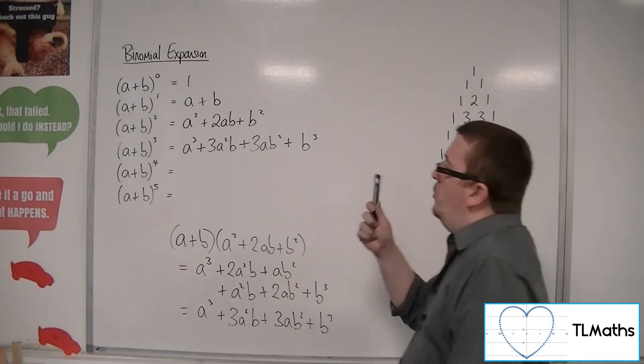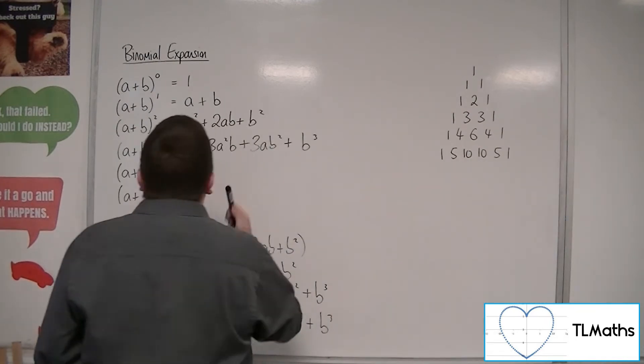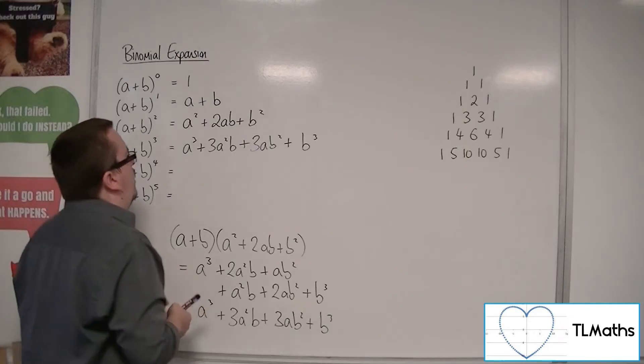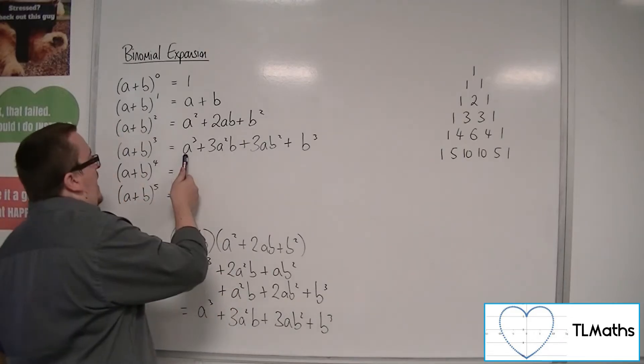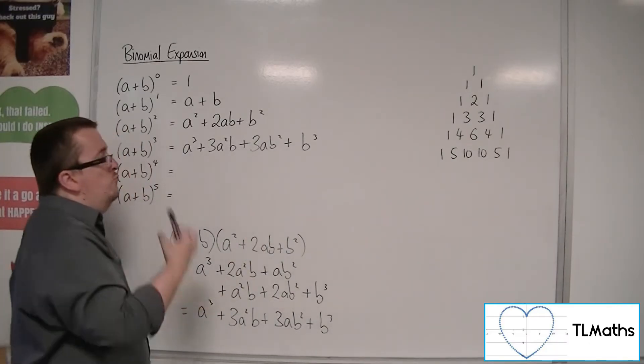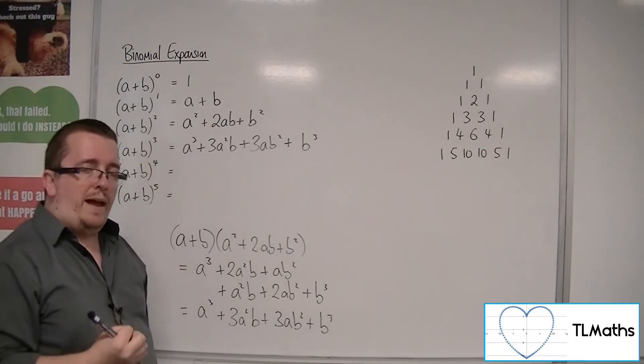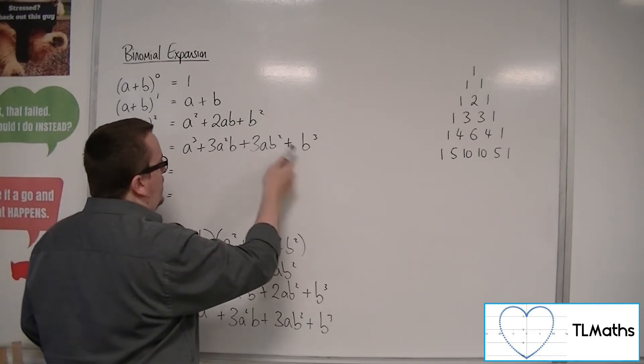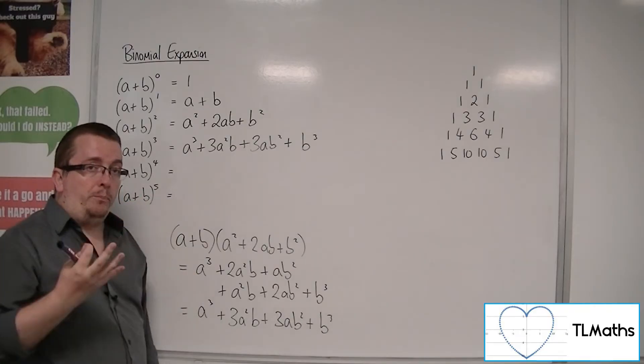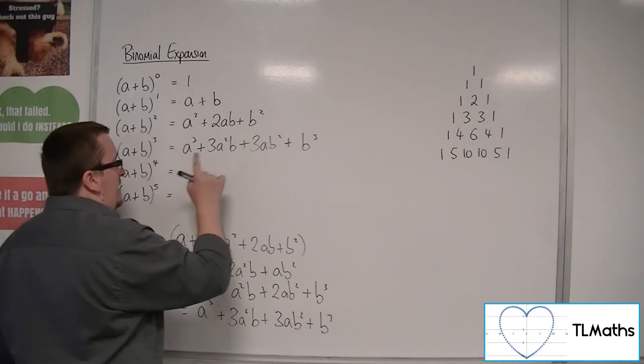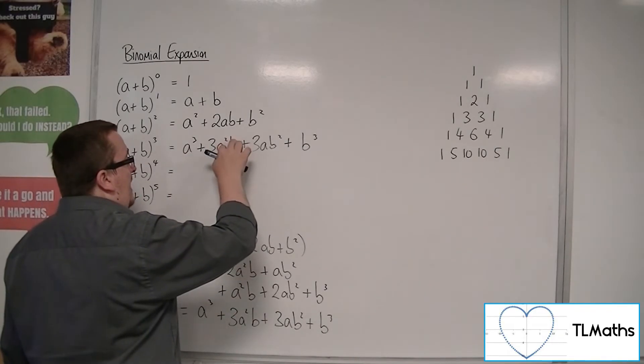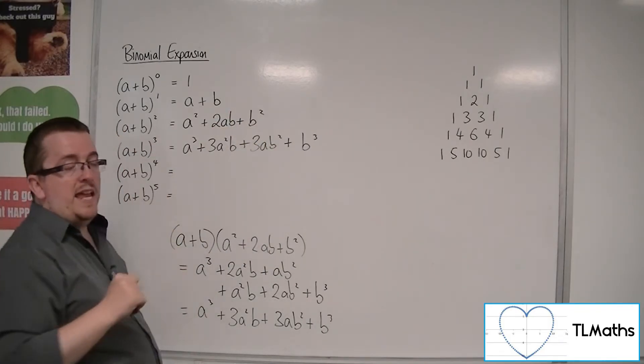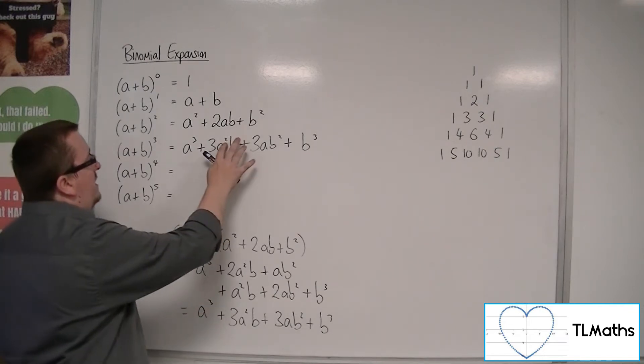But what is more important now is the fact that we spot these patterns with the As and the Bs. Because what we're seeing is that the As, with each progressive term, reduce 1 in the power, in the index. Whereas the Bs are increasing in power. You should also spot that the indices of the A and the B are always going to add up to this index here. So in this case, they're adding up to 3.